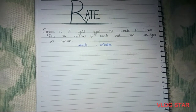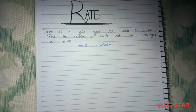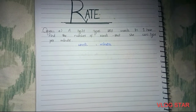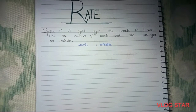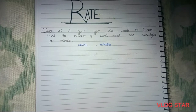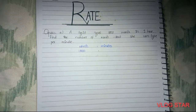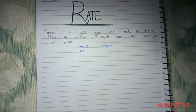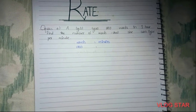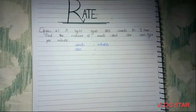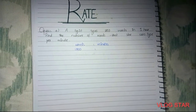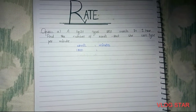According to the question, the typist types 1800 words in one hour. But we need the number of words she can type per minute. So we need to convert: 1 hour equals 60 minutes.